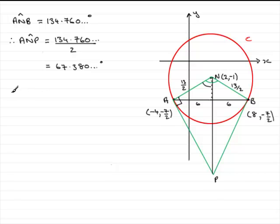We therefore know that the tan of the angle 67.380 and so on, is equal to the opposite side, AP, divided by the adjacent side, 13 over 2, the radius here. So 13 over 2.